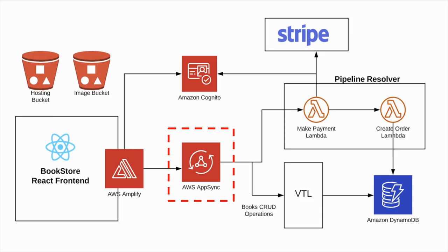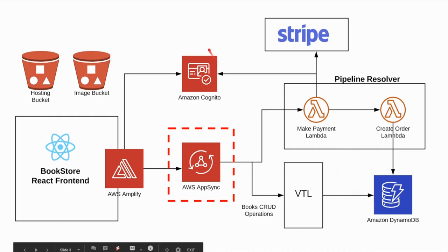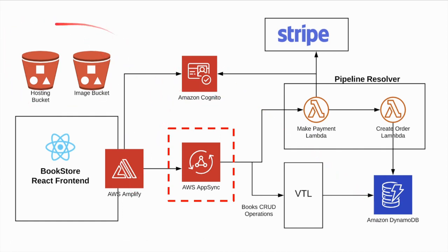We also have two S3 buckets: the website hosting bucket and another to hold our book images. This is the architecture I discussed in the last video. I've highlighted AppSync, the two Lambda functions, the DynamoDB table, Cognito for authentication and authorization, and the two S3 buckets.